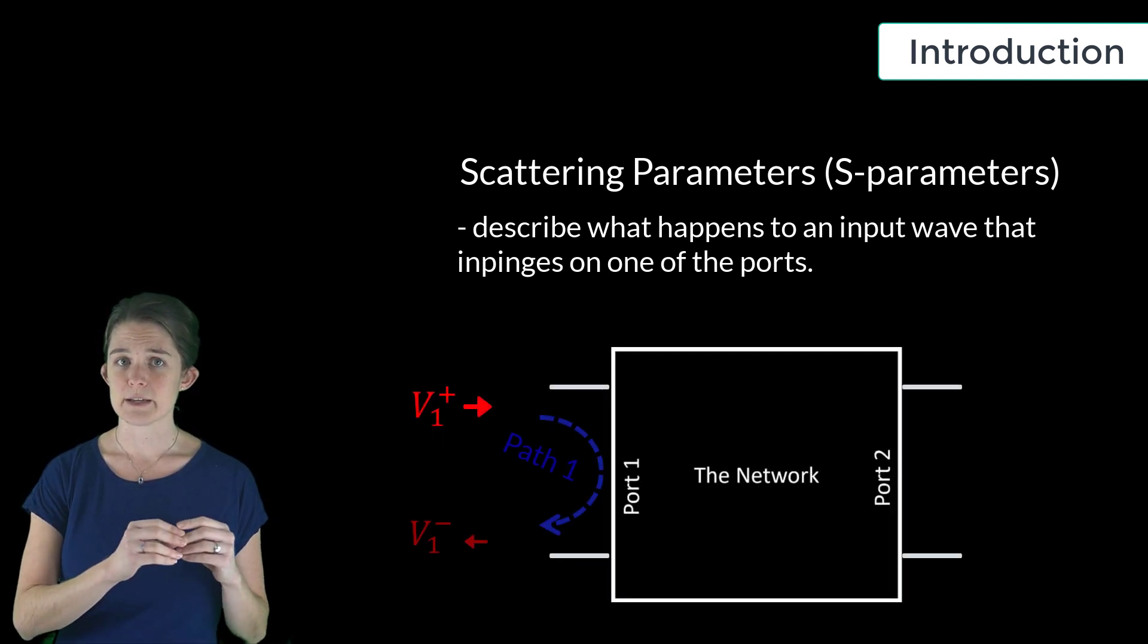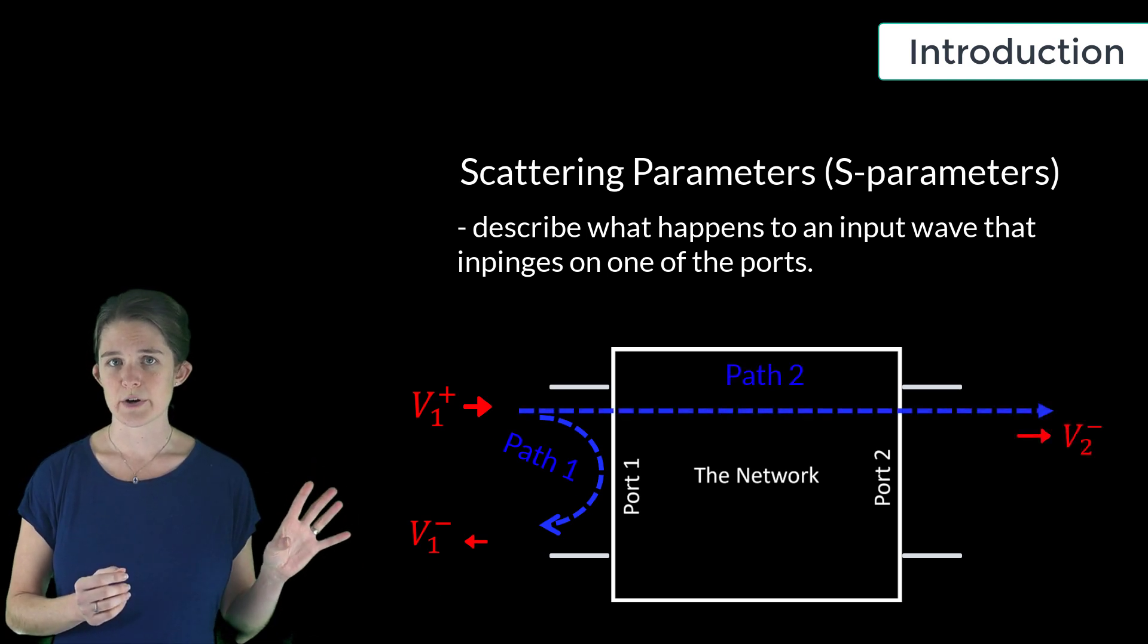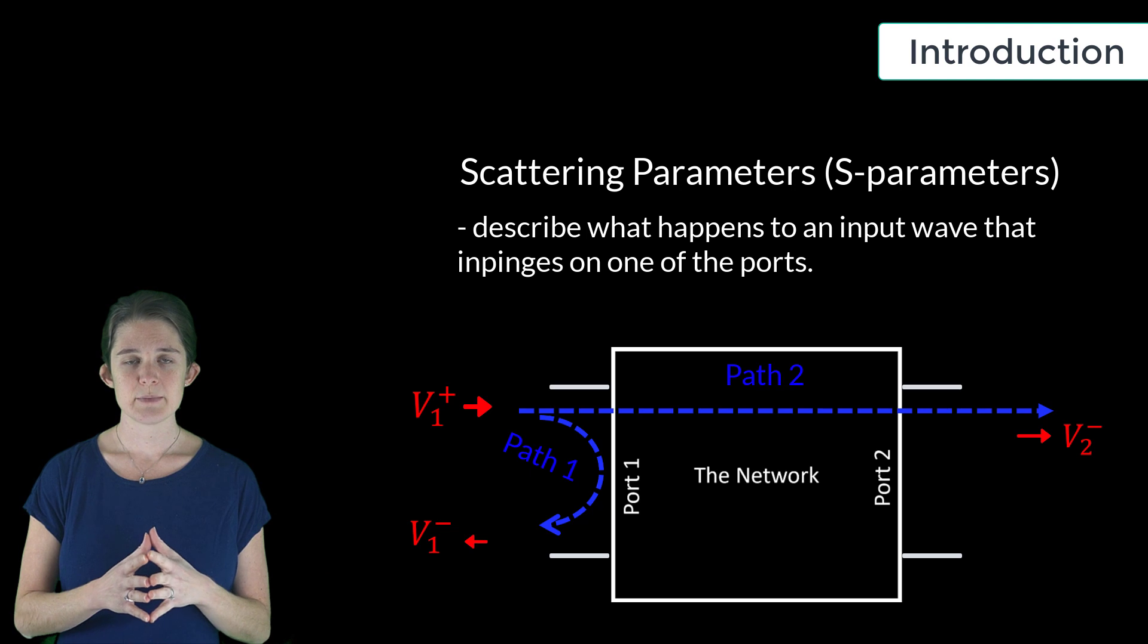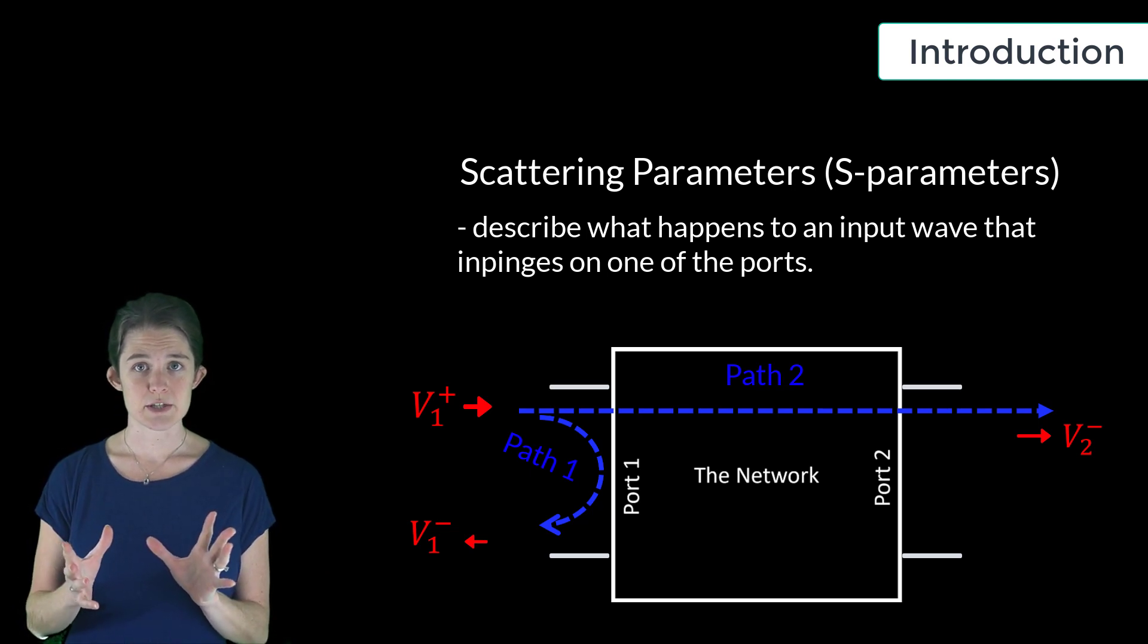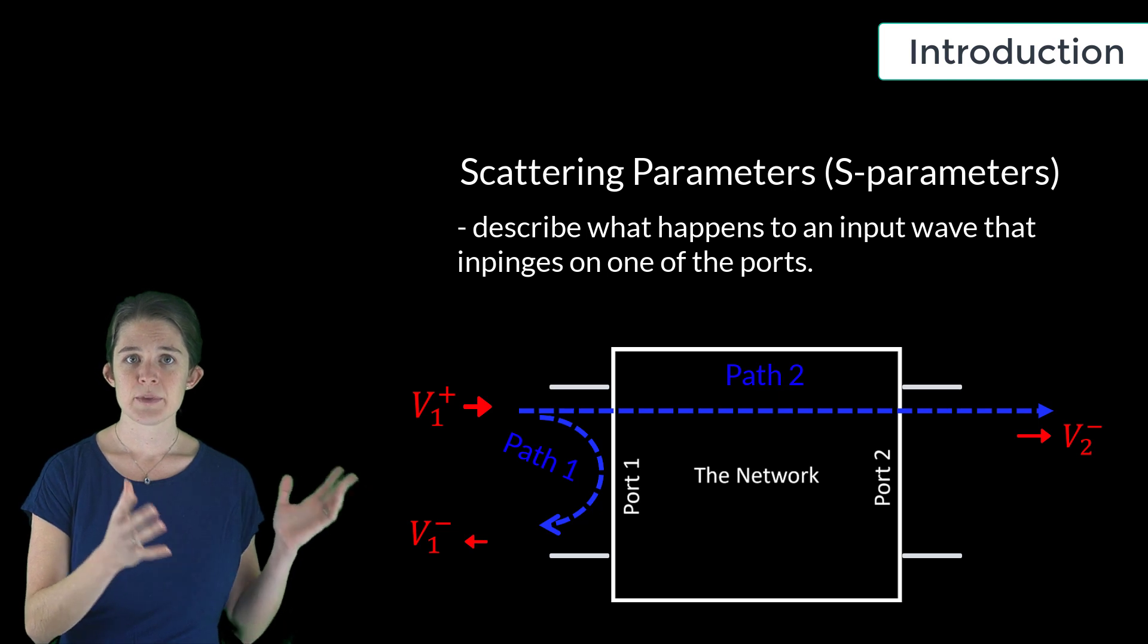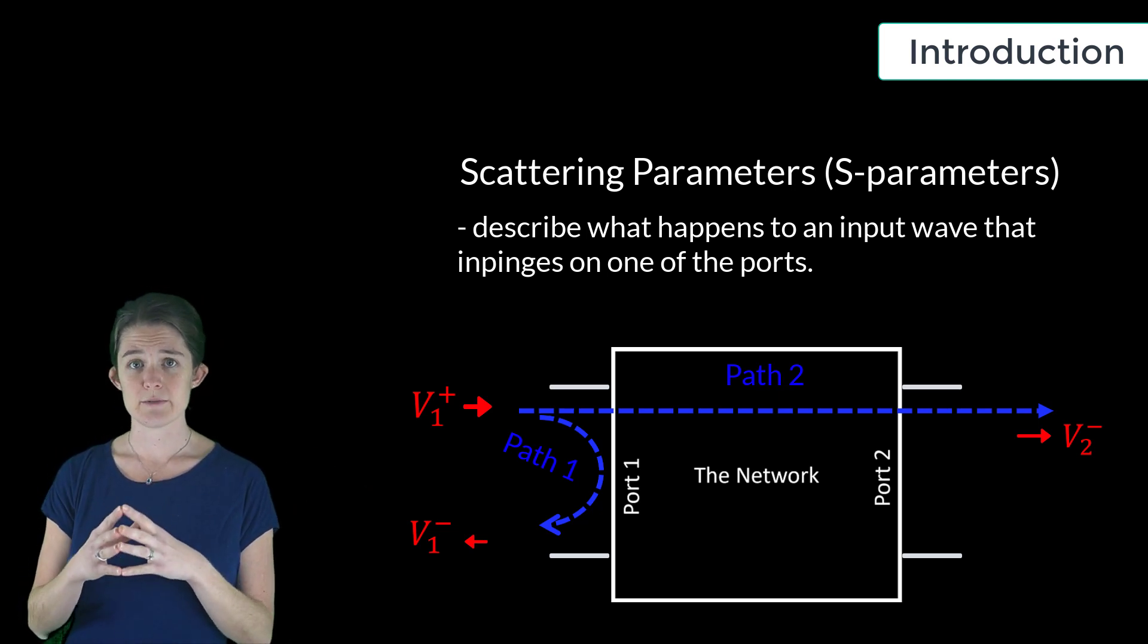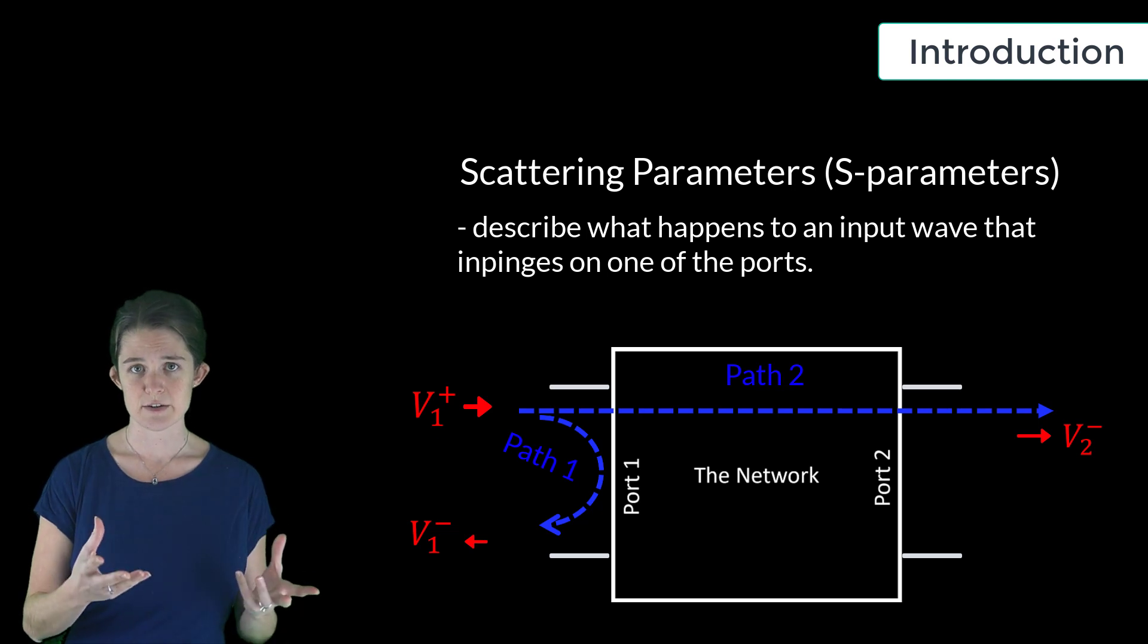This input signal may be reflected at that port, or it may be transmitted through the system to one or more of the output ports. Typically, this isn't an all-or-nothing proposition. Some of the wave gets reflected, and some gets transmitted. S-parameters, therefore, are used to describe how much of the wave travels down each of these trajectories.